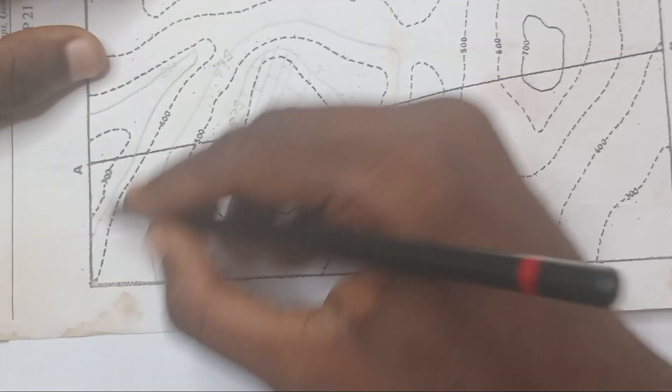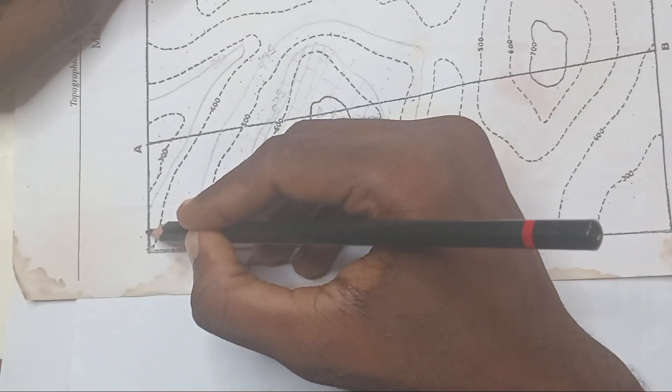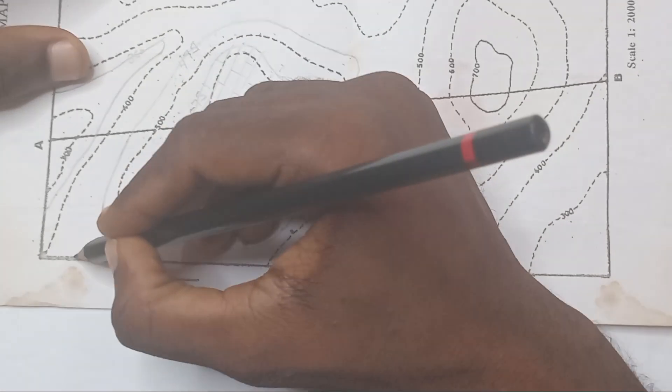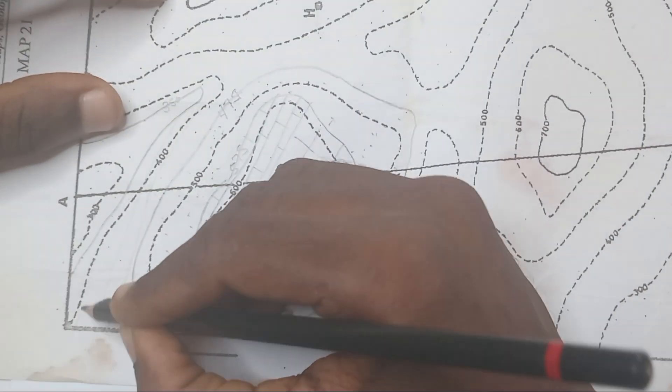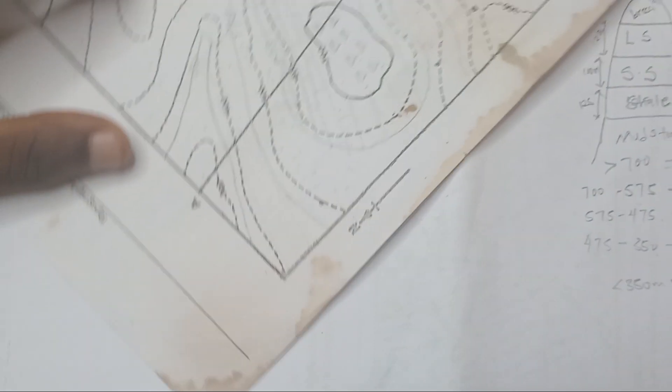Then after that, we have our shale. Shale is the next. So shale is just a straight line. Just a straight line.